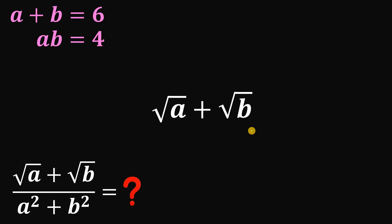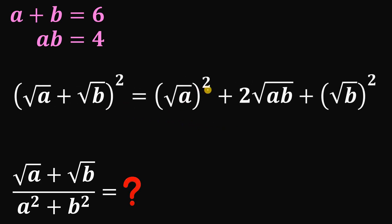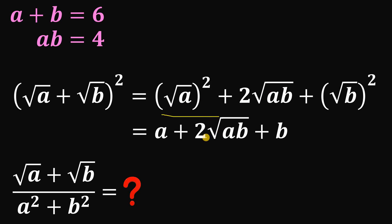What we're going to do is square this expression. When we square square root of a plus square root of b, this equals square root of a raised to the power of 2, plus 2 times square root of ab, plus square root of b raised to the power of 2. Square root of a squared is just a, and square root of b squared is just b.